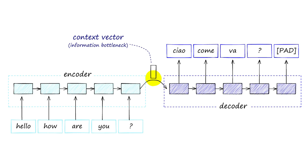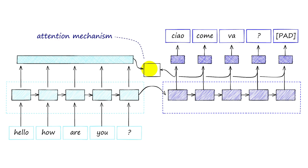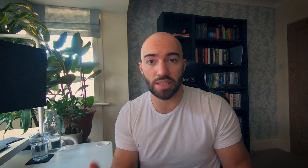The only issue is that we're trying to pass a lot of information through that single point between the encoder and the decoder. That creates what is called an information bottleneck — there's too much information trying to be crammed through that single point. So what they came up with is something called the attention mechanism. What the attention mechanism does is, for every step or every token decoded by the decoder, that token is sent to the attention mechanism, and its alignment is compared to all of the encoder hidden states.